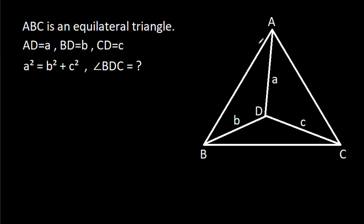In this video, we have been given that ABC is an equilateral triangle and AD is a, BD is b, and CD is c, and a² is equal to b² plus c². Then we have to find angle BDC.